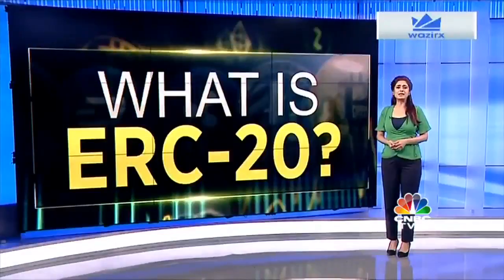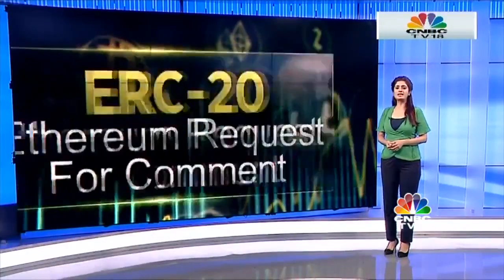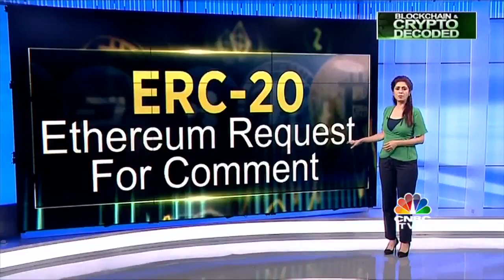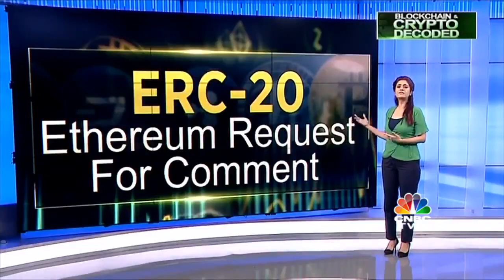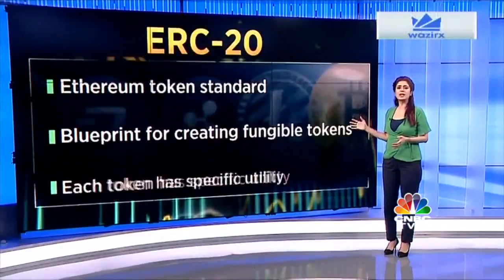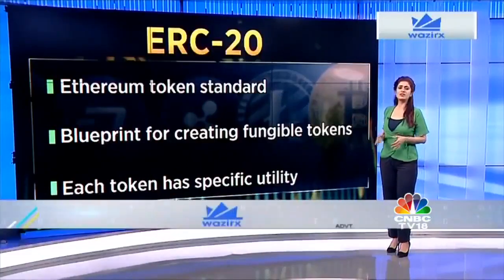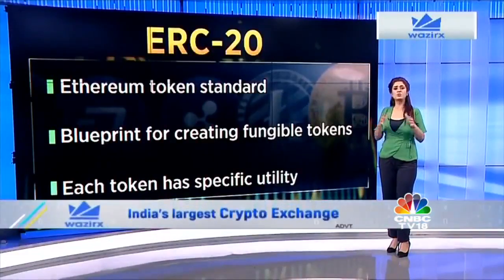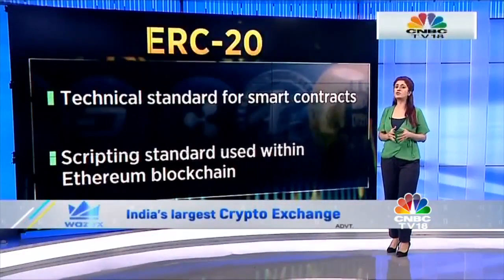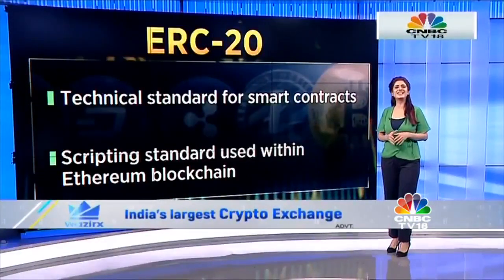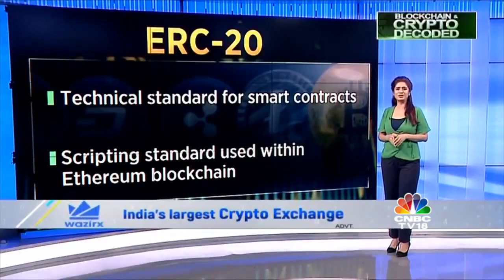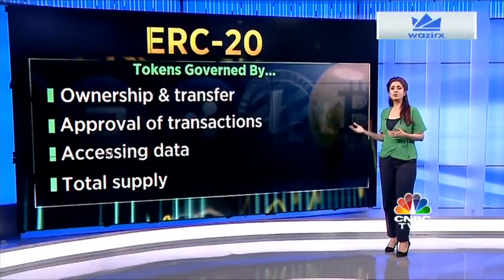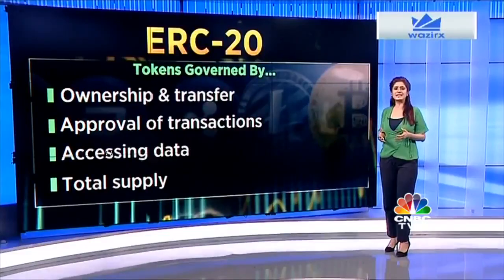The ERC-20 standard has seeped into almost every corner of the crypto ecosystem. ERC stands for Ethereum Request for Comment — it's a blueprint for creating fungible tokens, where each token has a specific utility. It refers to scripting standards used within the Ethereum blockchain for all smart contracts, listing rules that all Ethereum tokens should adhere to on how tokens can be transferred and how transactions are approved.